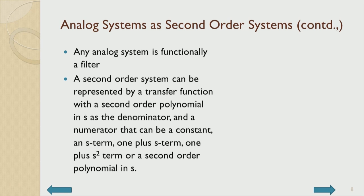Any analog system is functionally a filter. These linear systems can always be modeled as a filter. An amplifier - even a wideband amplifier - is going to do filtering because of the fundamental limitation of gain variation with respect to frequency; gain always falls at higher frequencies. A second order system can be represented by a transfer function with a second order polynomial in S as the denominator, and the numerator can be a constant, S term, S-squared term, or a combination of all these terms.